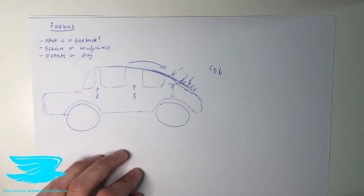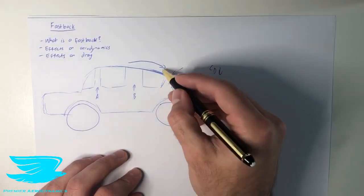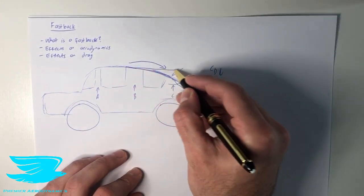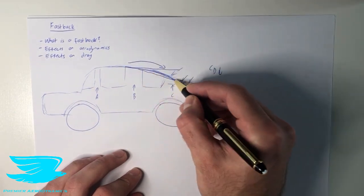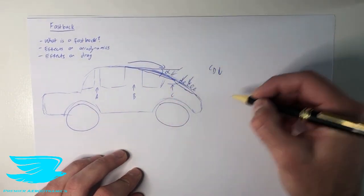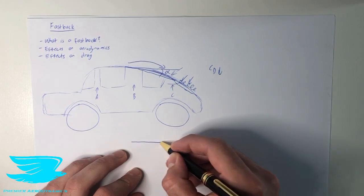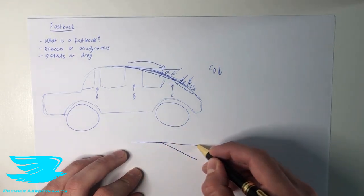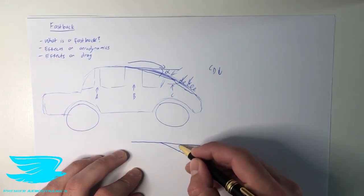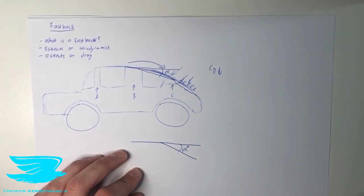However, there are some more important points that we should be making. First of all, what is the effect of the angle between the car roof and the fastback alpha here? So we have a simplified version, the fastback here, and we have this angle here. What is the effect of this angle on drag?